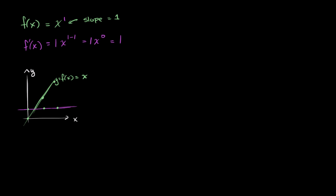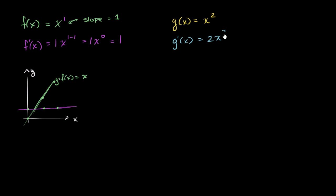Now let's try something where the slope might change. So let's say I have g of x is equal to x squared. The power rule tells us that g prime of x would be equal to what? Well, n is equal to 2, so it's going to be 2 times x to the 2 minus 1, or it's going to be equal to 2x.